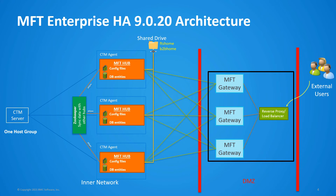ZooKeeper is used to synchronize configuration data between each hub, and you will notice a ZooKeeper process running on each of the hubs in the cluster. ZooKeeper uses a leader-follower architecture, so in each MFT Enterprise HA environment one of the MFT hubs will act as the ZooKeeper leader node and the others will act as follower nodes. ZooKeeper requires ports 3182 and 3183 to be open between each hub for its own communication and data synchronization.